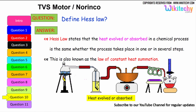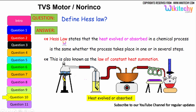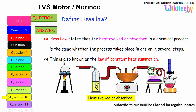Define Hess's Law. In the case of heat generated between an object and its emissions, Hess's Law states that the heat evolved or absorbed in a chemical process is the same whether the process takes place in one step or in several steps. This is also known as the law of constant heat summation.